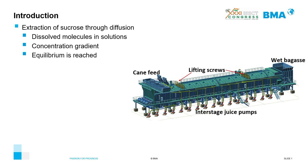To maximize extraction, interstate juice pumps are installed. These pumps take the juice from the succeeding stage and add it as imbibition to the preceding stage. Essentially, the bagasse moves in one direction while the flow of juice is directed in the opposite direction, in a counter-current fashion.